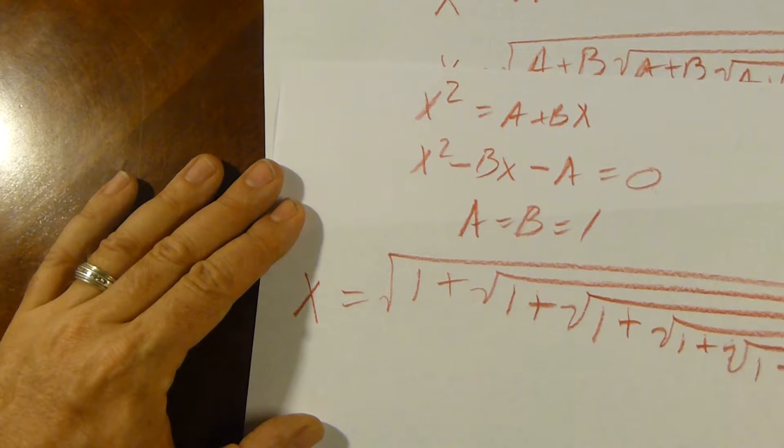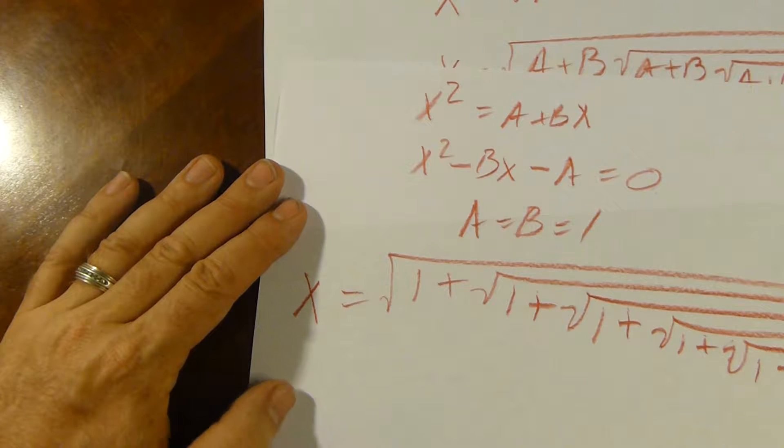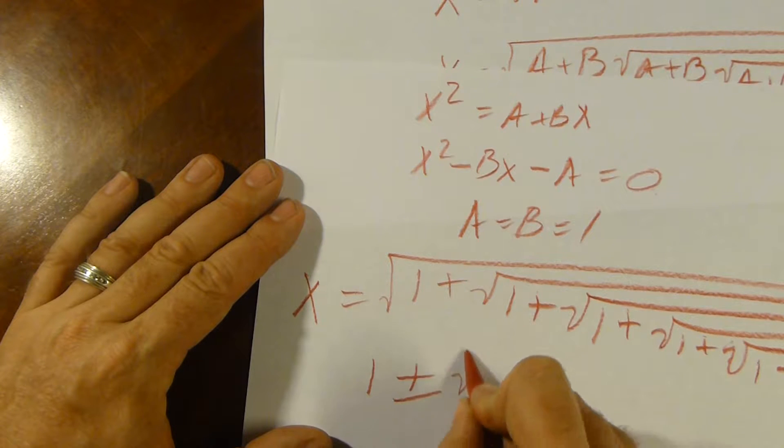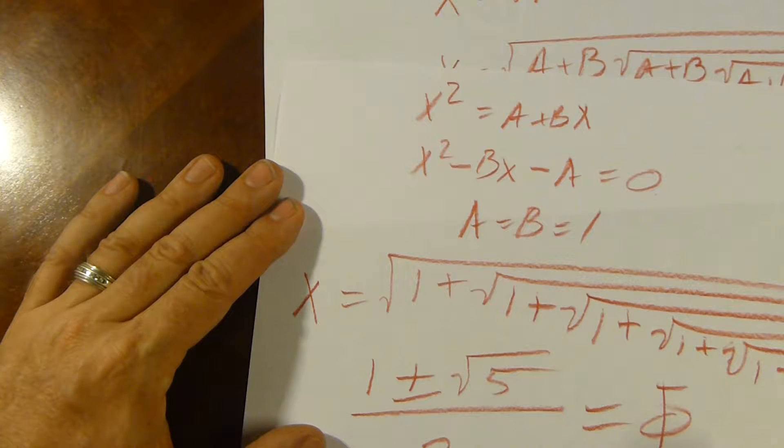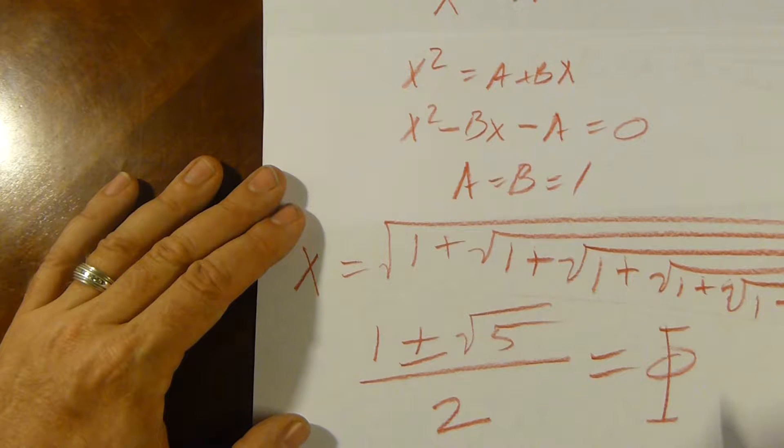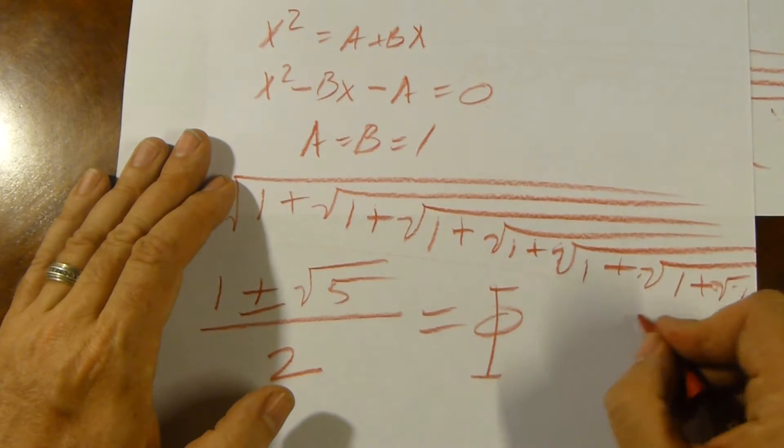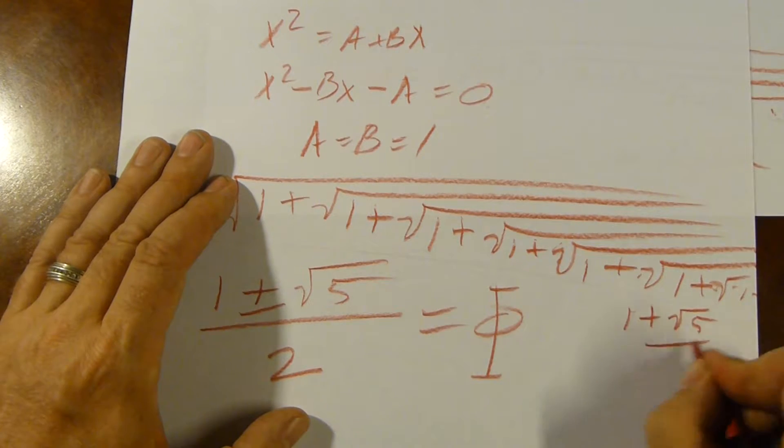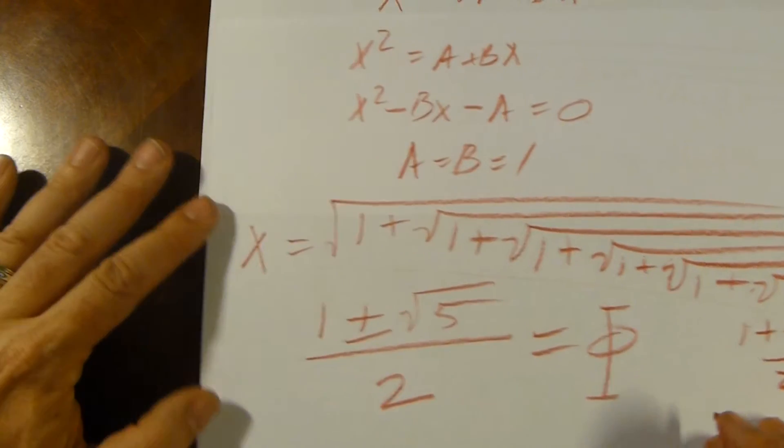Now, what does this equal? Well, this equals actually, you may have seen this before, the golden ratio. It popped up oddly when we did the continued fractions earlier, and it popped up again using a very simple nested radical. Now, it converges to the positive value here, the 1 plus root 5 over 2, but nonetheless, there are two solutions.